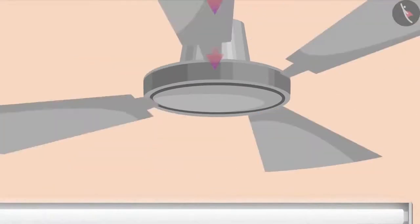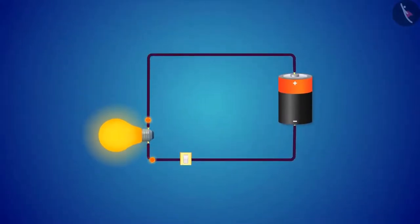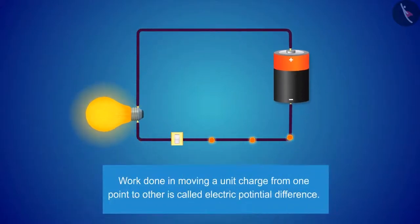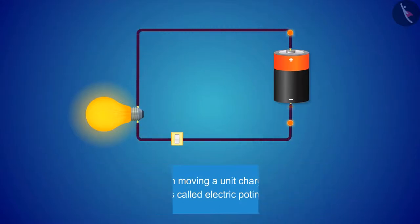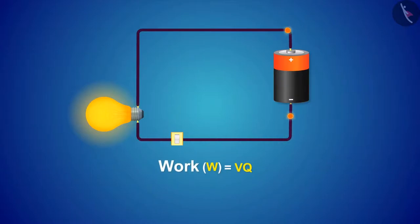If we look in terms of science, work done in moving a unit charge from one point to another is called electric potential difference. So if we take the entire work, which is known as the total work done, we can represent it with W.